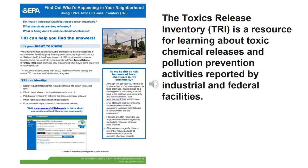The Toxics Release Inventory created by the EPA is a way for you to find out about what's happening regarding environmental toxins in your local area. You can learn about chemical releases and pollution prevention activities reported by industrial companies and federal facilities. Look for that if you're coming to a new area to live — it's important for you to know about it for your health.